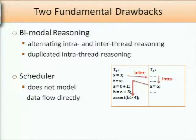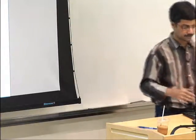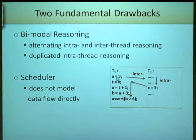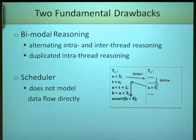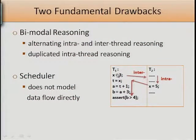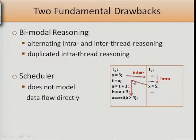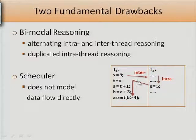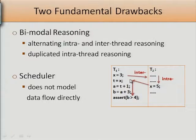There are two main bottlenecks of almost all previous analysis techniques. The first I call bimodal reasoning. Consider two threads T1 and T2. A typical analysis executes x equals 3 (a write), switches to T2, propagates the read and the write through T2 — that's intra-thread reasoning — then switches back. The problem is that for every interleaving, these local facts are recomputed. Once the value of x is read, all the local facts could be computed just once. This repeated intra-thread reasoning for all possible interleavings is the first bottleneck.